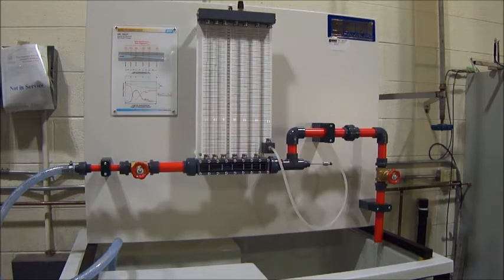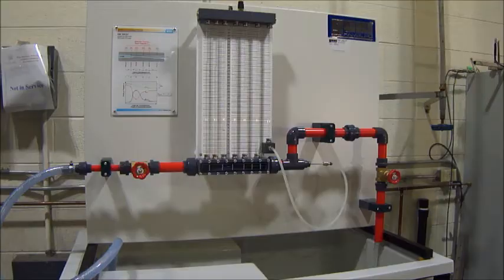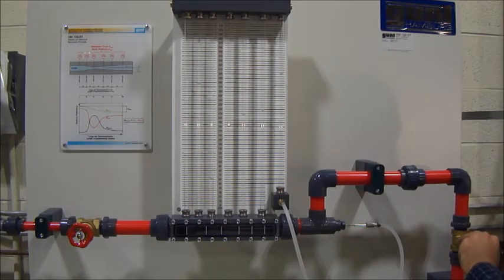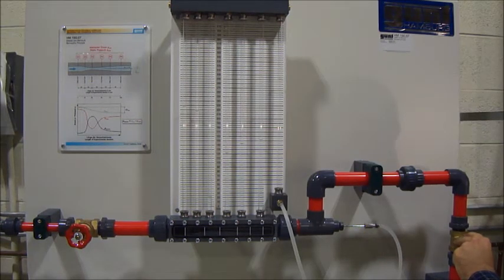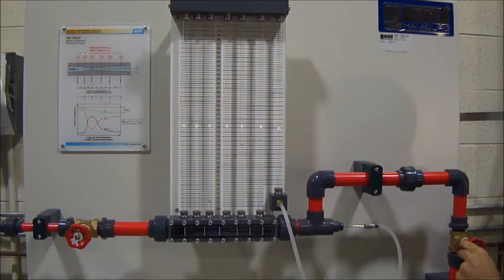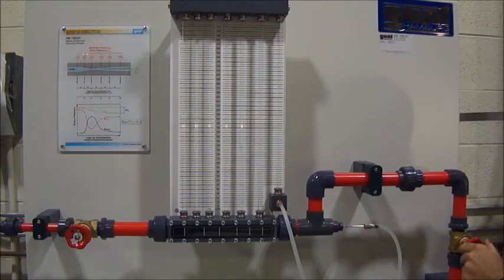This completes the experiment for one flow but it should be repeated for a minimum of two other flows. To do this adjust either the inlet or outlet valve by turning only a few degrees to increase or decrease the flow rate as long as the water column heights stay within the upper and lower limits.